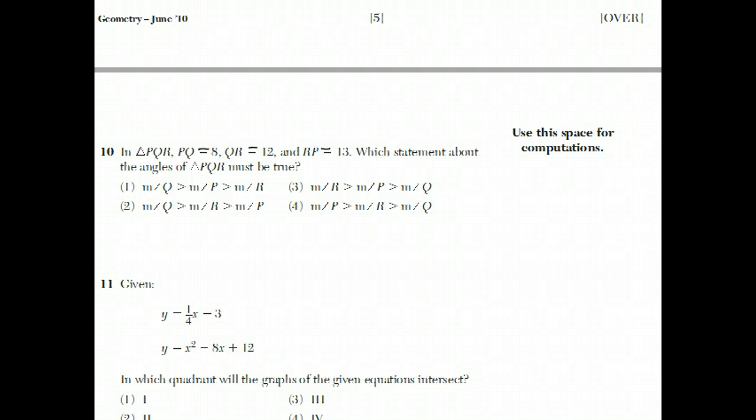Question 10 says, if you have a triangle PQR, and you know the lengths of the three sides are 8, 12, and 13, they want to know what's the relationship between the angles. So if I draw a triangle, and I make the smallest side 8, and medium side 12, and biggest side 13, it's PQ that's 8, and it's QR that's 12. So I'm going to put the Q here, so it's part of the 8 and the 12.